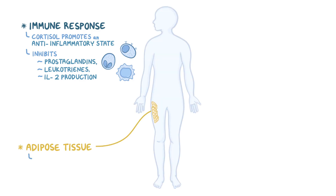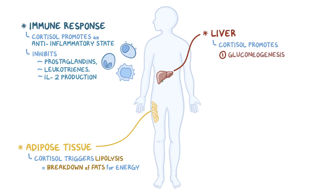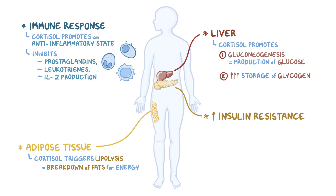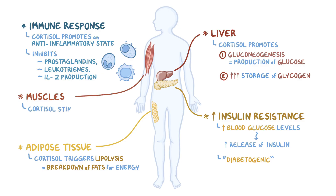In adipose tissue, cortisol triggers lipolysis, which is the breakdown of fats for energy, which can be used by other cells throughout the body. In the liver, it promotes gluconeogenesis, which is the production of new glucose molecules, and increased glycogen storage. Cortisol also increases insulin resistance in tissues, meaning insulin becomes less effective at moving glucose into cells, leading to an increase in blood glucose levels. This stimulates the release of more insulin, and because this is similar to what happens in people with diabetes, this effect of cortisol is called diabetogenic. In the muscles, cortisol stimulates proteolysis, which is the breakdown of proteins into amino acids, which then serve as substrates for gluconeogenesis.